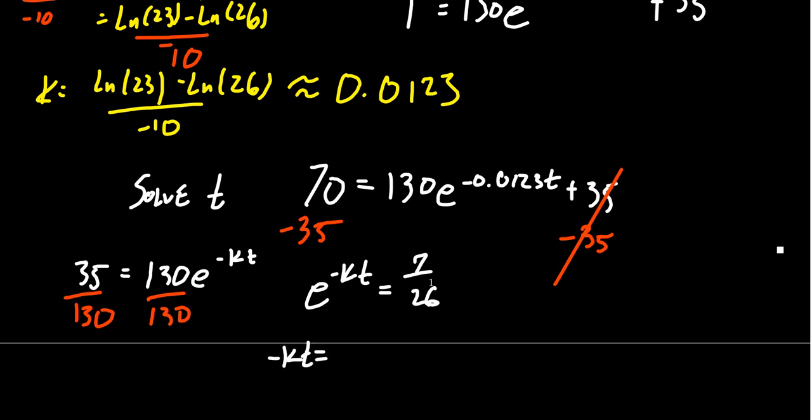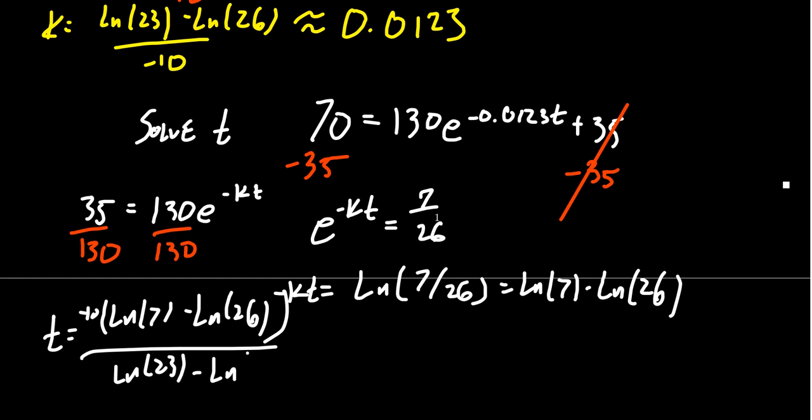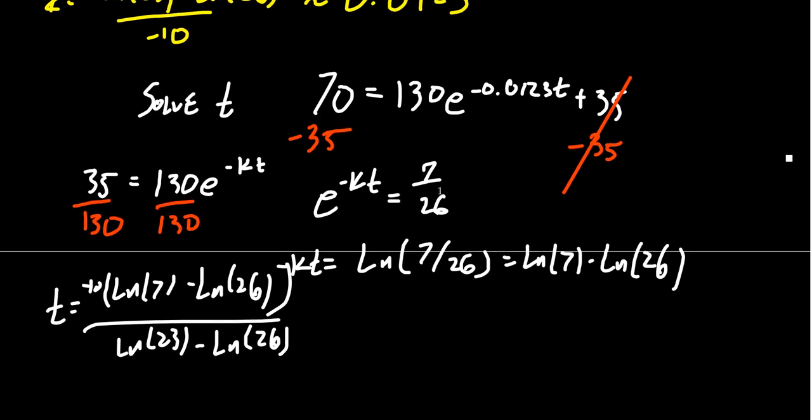We're going to get negative KT is equal to the natural log of seven over 26. Or if you prefer, you could write that as the natural log of seven minus the natural log of 26. In which case, now we have to divide both sides by K. And so we end up with T is going to equal the natural log of seven minus the natural log of 26 divided by K, which honestly K was this value from before. So you're going to get a negative 10 times that divided by the natural log of 23 minus the natural log of 26. Although there's two subtractions of 26 there, that's not going to do you a whole lot of good. Just leave it alone. You can't just cancel the natural log of 26 across the fraction bar there. But anyways, you throw this number into your calculator.